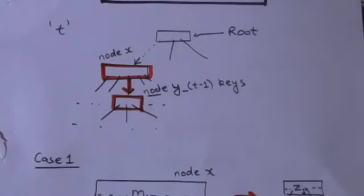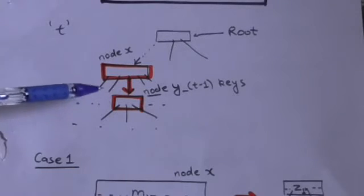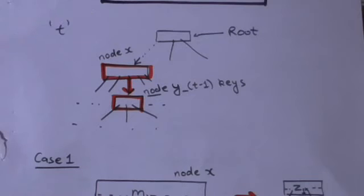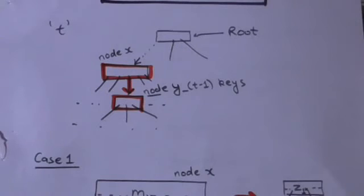Suppose we have reached node X of the B-tree and this node X does not contain the key to be deleted, and node X is an internal node. From node X, suppose we have to move to node Y because node Y is the root of the subtree which contains the key to be deleted, but node Y has only T-1 keys, so we cannot move to it. We have to solve this issue.